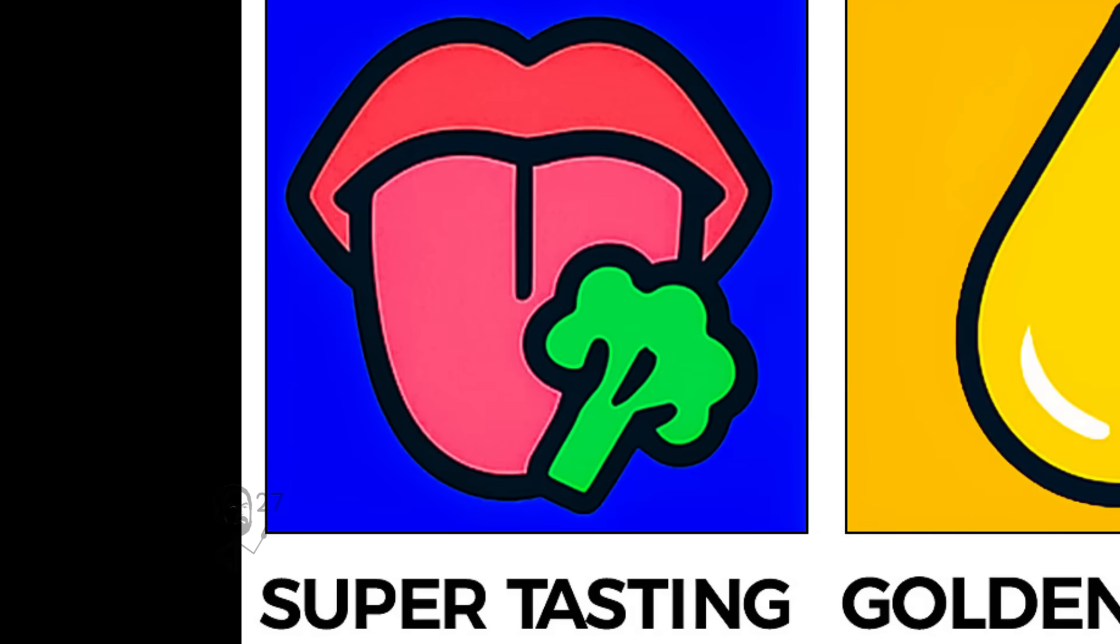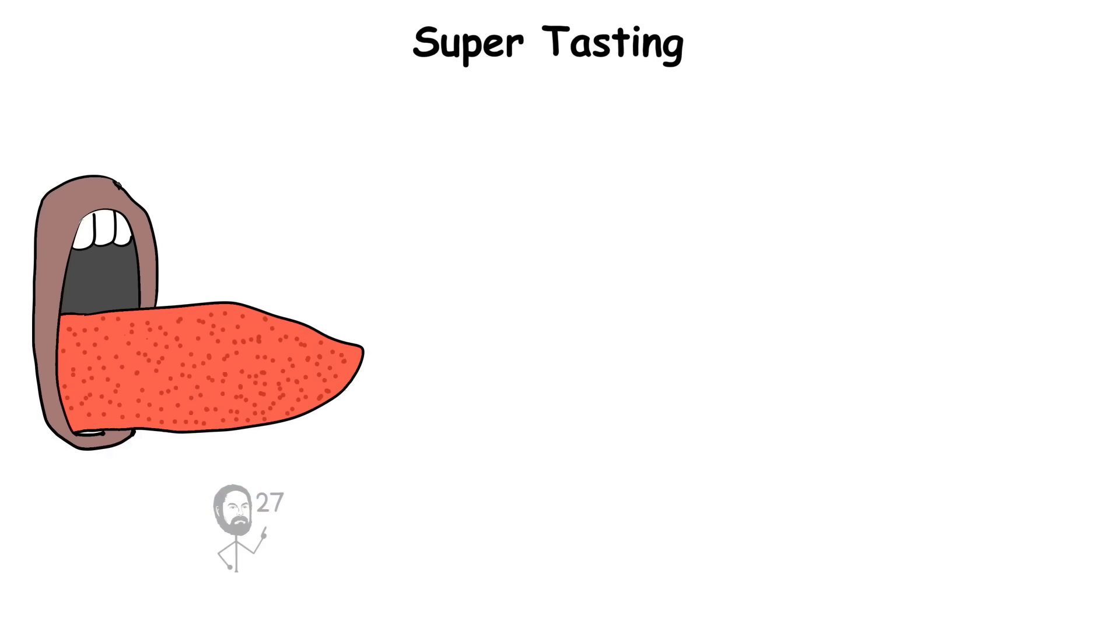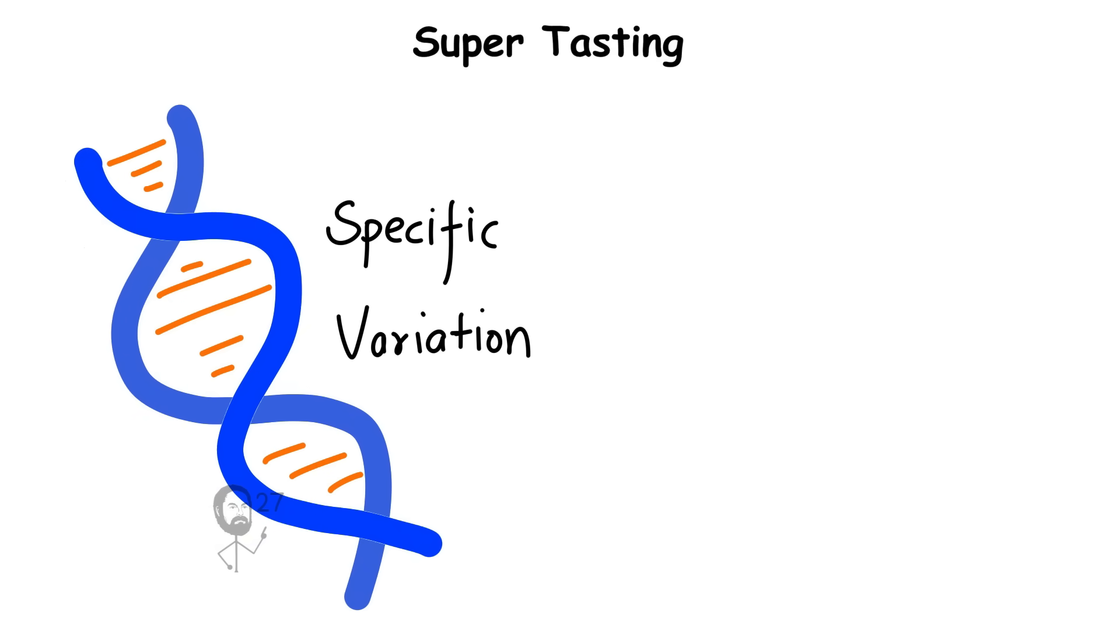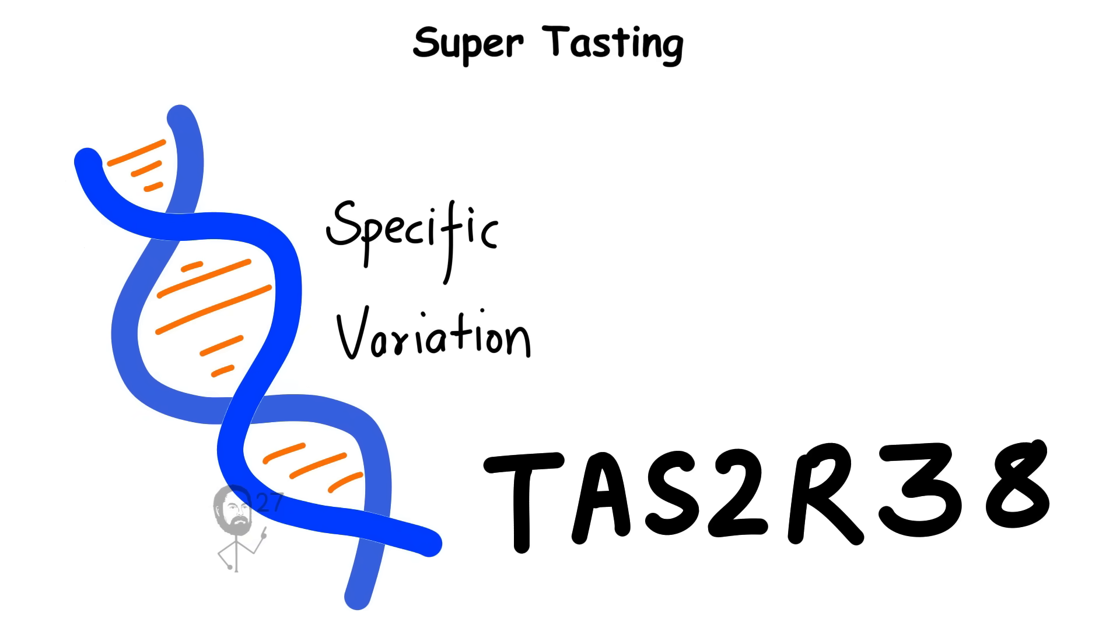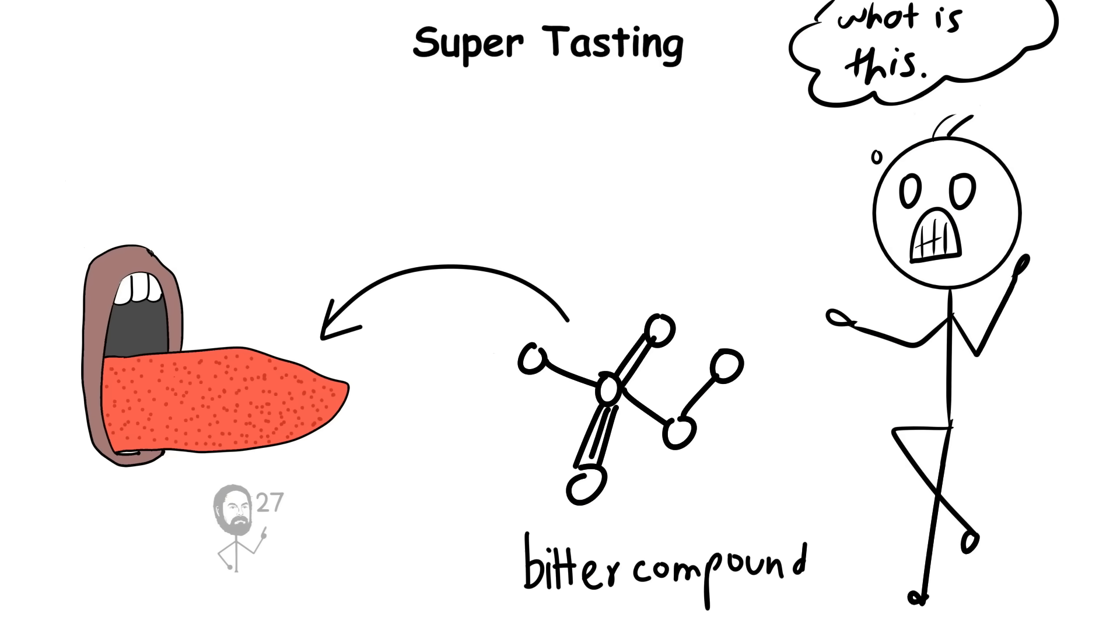Super tasting. TAS2R38 variant. Taste is controlled by specialized receptors on the tongue that detect compounds like sweetness, bitterness, and saltiness. A specific variation of the TAS2R38 gene increases the density and sensitivity of taste buds that respond to bitter chemicals.